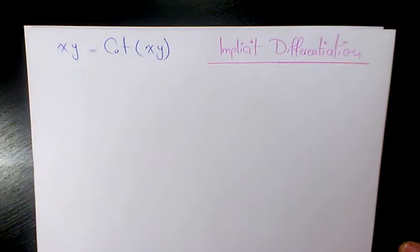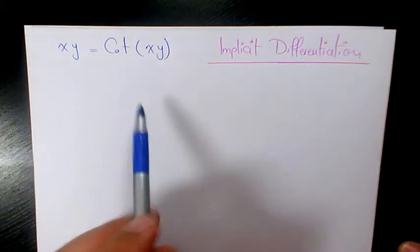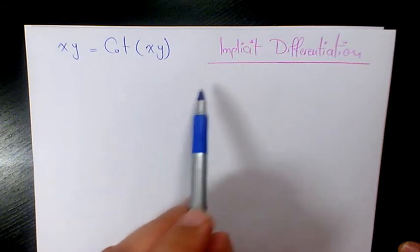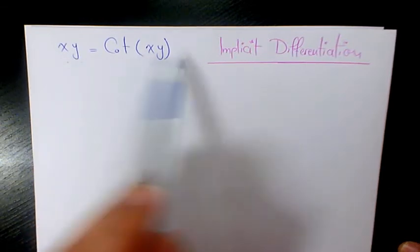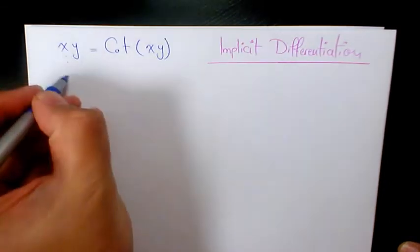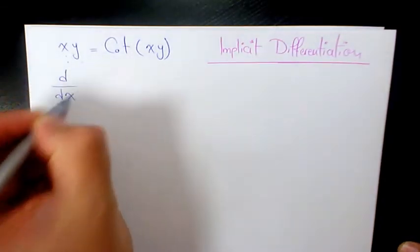What's up guys, this is Massey. Welcome to another video. In this video I want to show you how to find the implicit differentiation of xy equals cotangent xy.